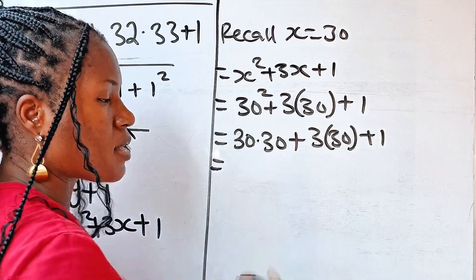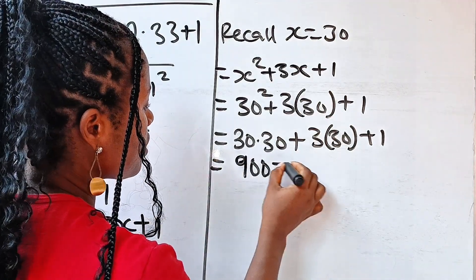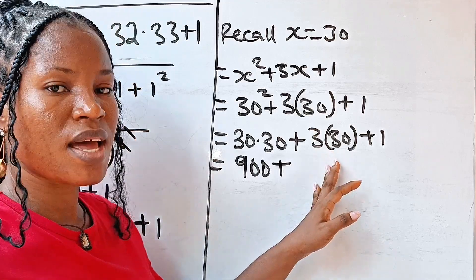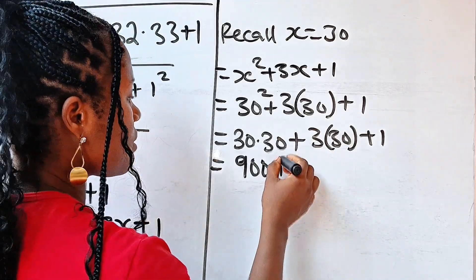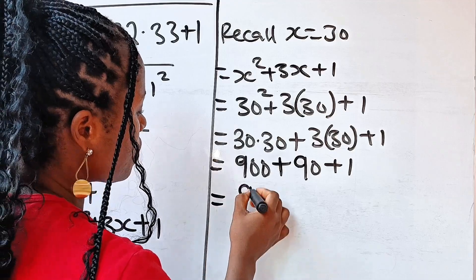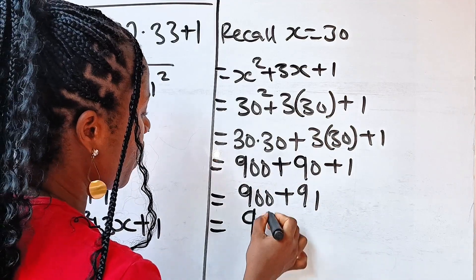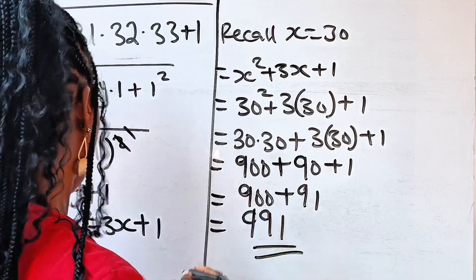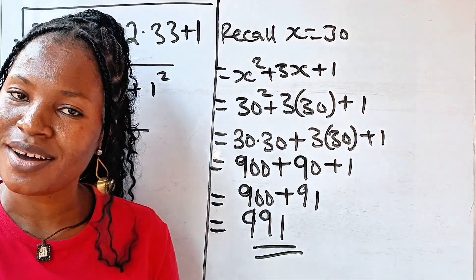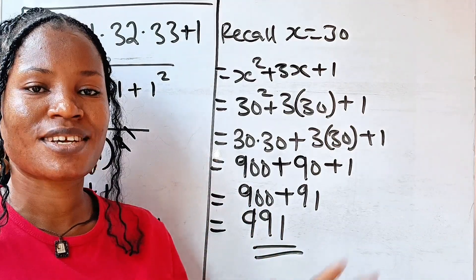Now, 30 times 30 is the same thing as 300 times 3, which is 900. So we have 900 plus 3 times 30 is 90. We have 90 plus 1. Now, this is equal to 900 plus 91, which is equal to 991. As easy as that without a calculator. I wish to see you in my next video. Thank you so much for watching. Bye.